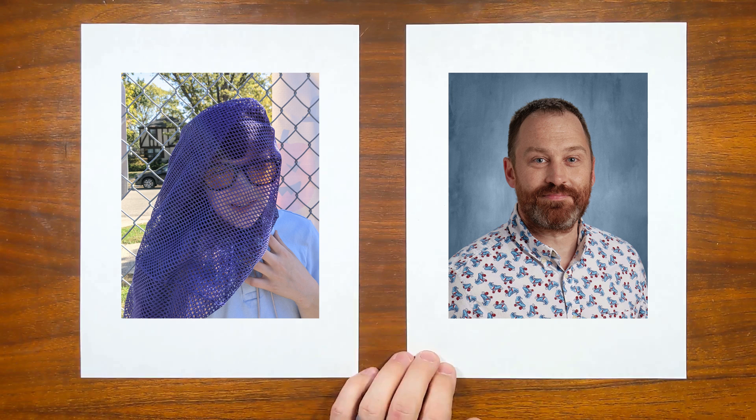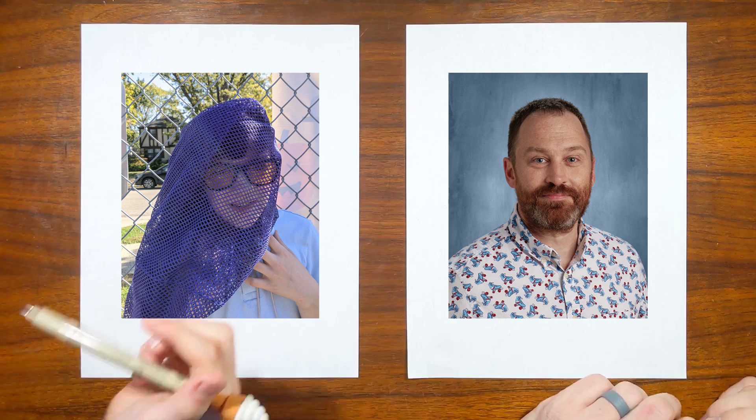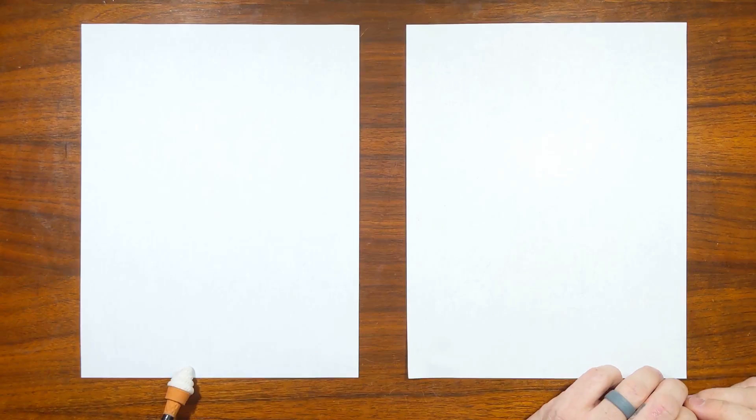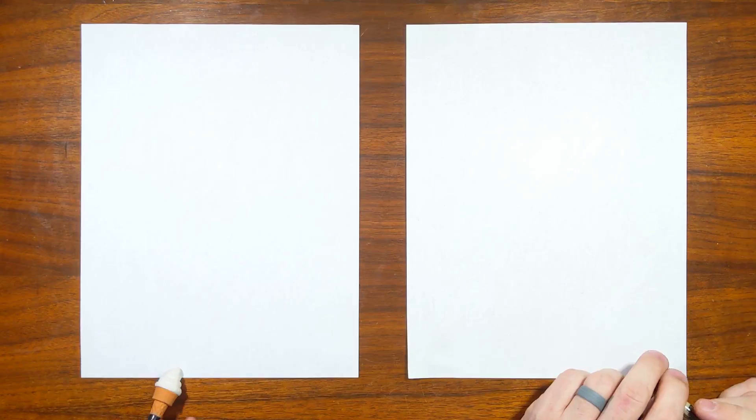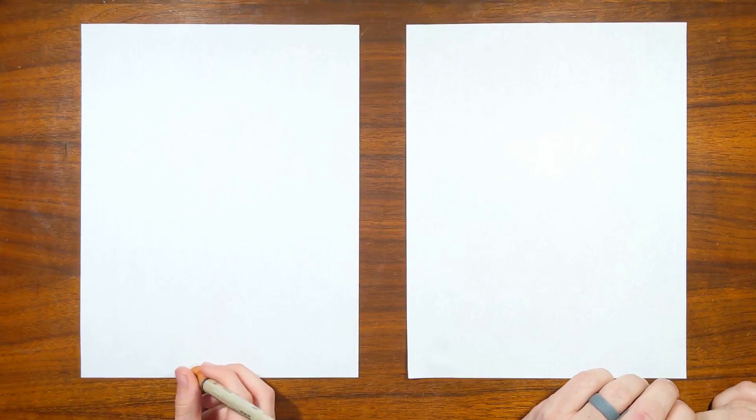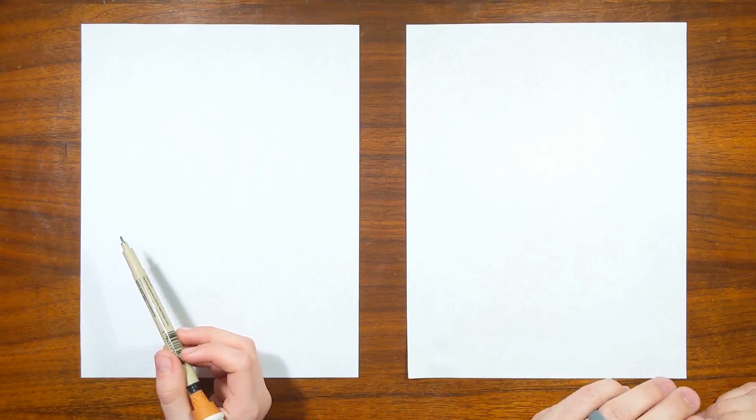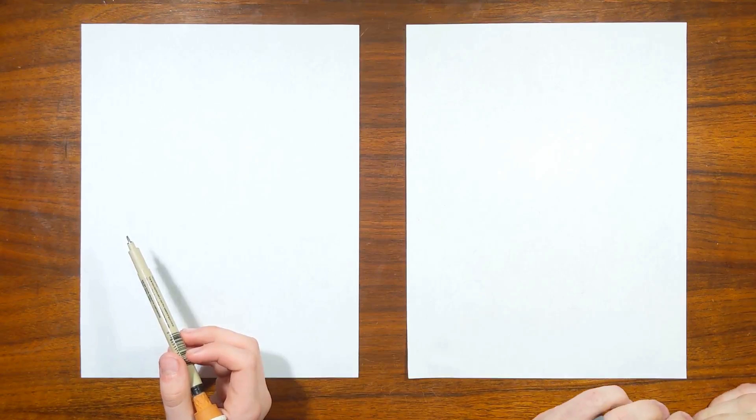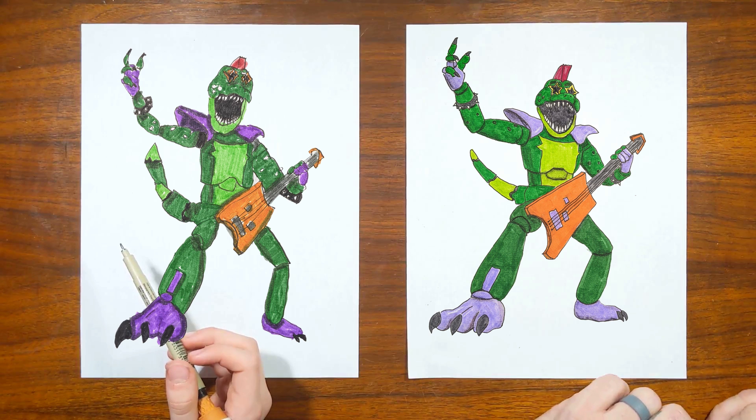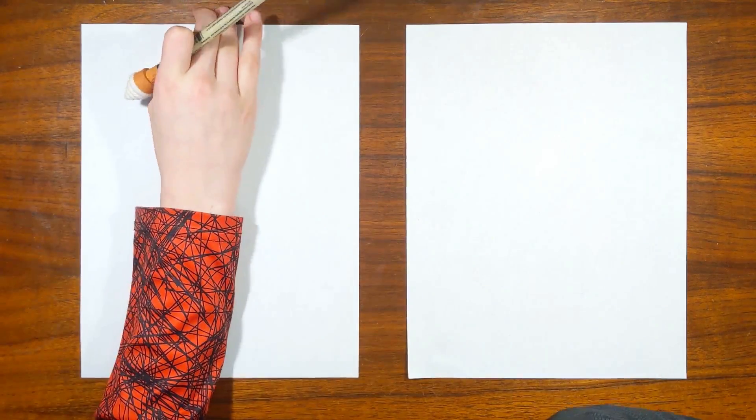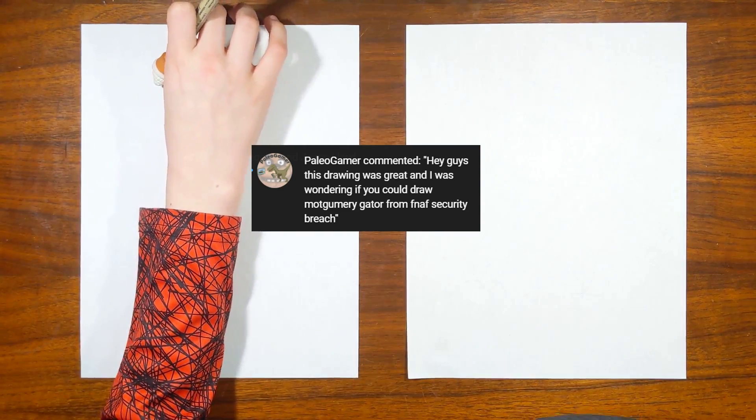Hello there! Welcome to Drawing with the Blakeleys. I'm Dad. And I'm Charlie. Hey Charlie, who are we drawing today? I don't know. Montgomery Gator from Five Nights at Freddy's Security Breach. Yeah, sure, I guess. Thank you to Paleo Gamer for suggesting this one.